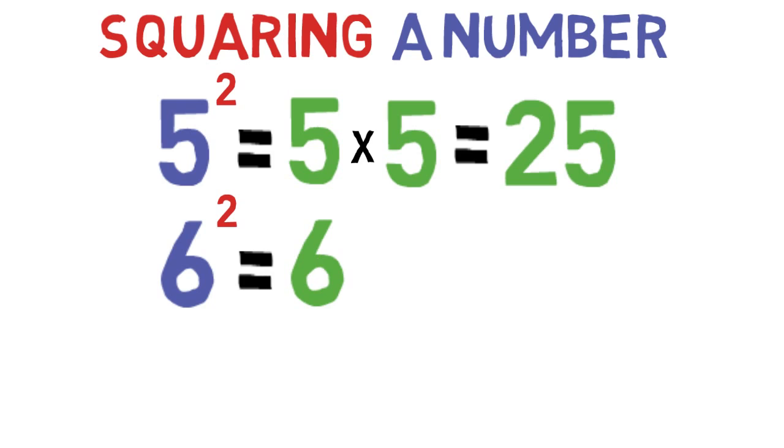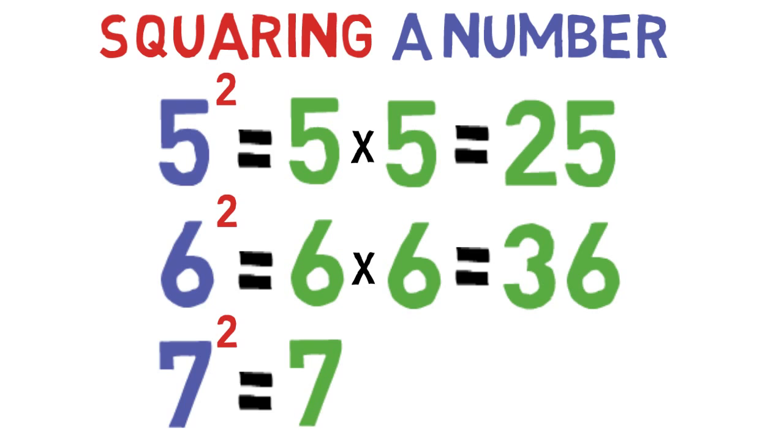6 squared means 6 times 6, which equals 36, and 7 squared means 7 times 7, which equals 49.